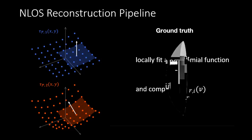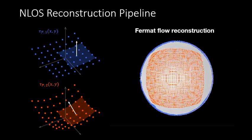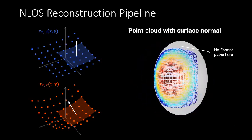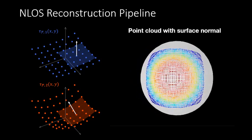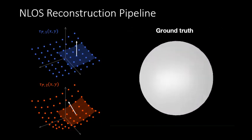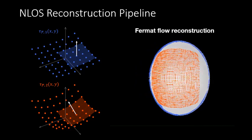Finally, given these pairs of Fermat path lengths and their gradients, we can reconstruct the point cloud and surface normals corresponding to the non-line-of-sight object. This oriented point cloud can be used as input to an algorithm such as Poisson surface reconstruction to finally produce a continuous surface corresponding to the non-line-of-sight object.